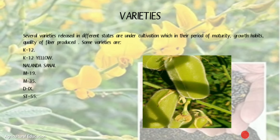Varieties: Several varieties released in different states are under cultivation, which differ in period of maturity, growth habits, and quality of fiber produced. Some varieties of sunhemp are K-12, K-12-Allo, Nalanda-Sanai, M-19, M-35, D-9, and ST-55.